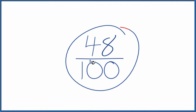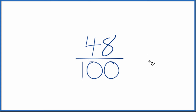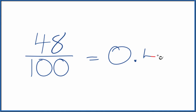Let's write the fraction 48 one-hundredths as a decimal. There are a few ways we can do this. First, you could divide 48 by 100 on a calculator, and you could also do it longhand. Both ways give you 0.48. So the fraction 48 over 100 equals 0.48 — that's our decimal.